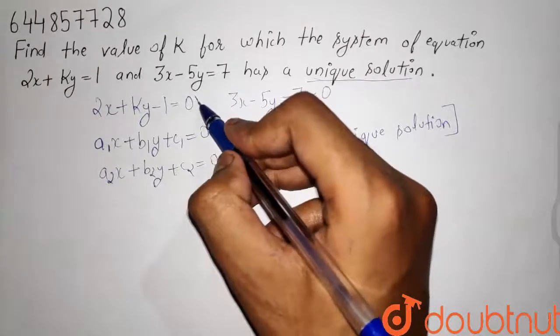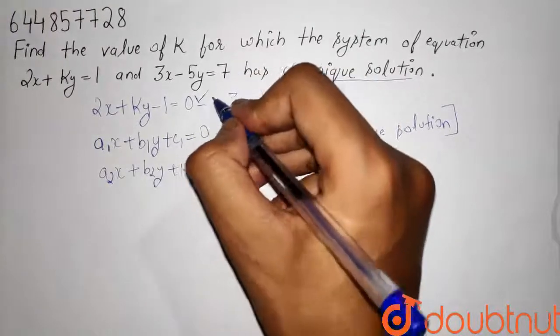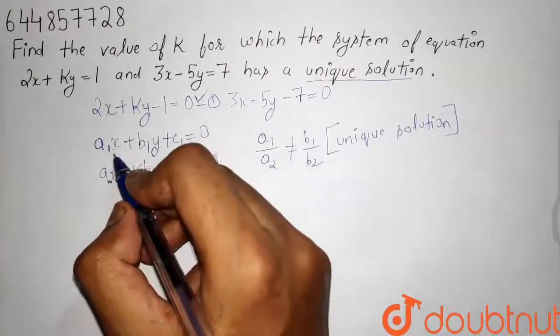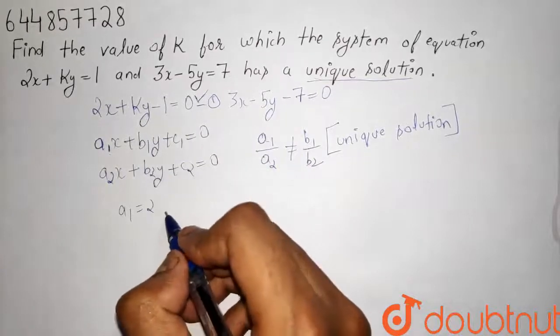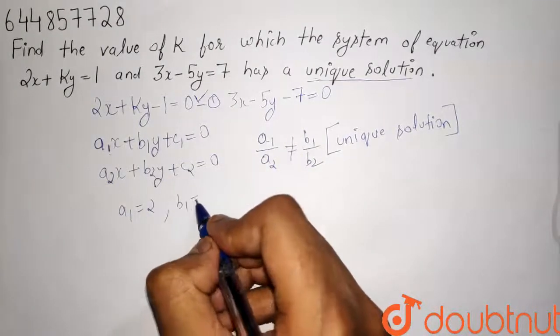Comparing the first equation with this, we will get a1 is equal to 2 and b1 is equal to k.